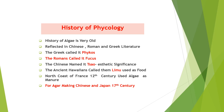The history of algae is very old. Being diverse organisms, they have a very old history reflected in Chinese literature as well as in Roman and Greek literature. The Greeks called algae 'phycos.' Ancient Hawaiians called them 'limo,' where they were used as food. The north coast of France in the 12th century used algae as manure, and in the 17th century Japan and China used algae for agar-making, showing its commercial importance.